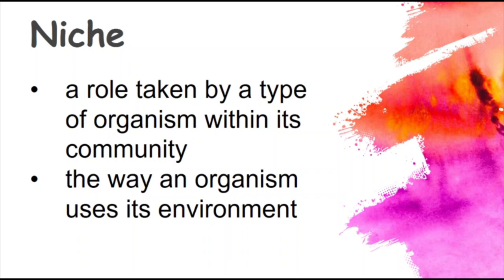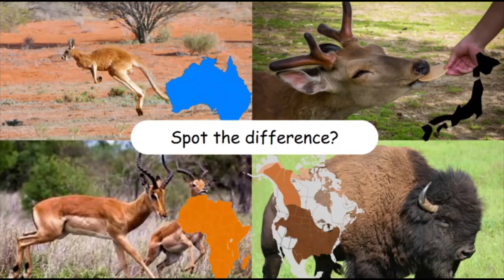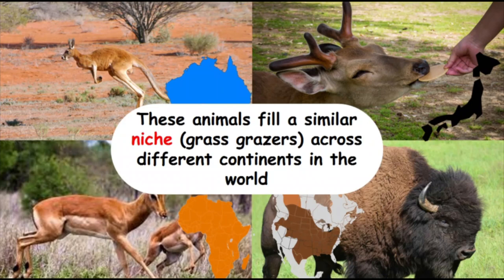For the exam board, if you were asked to define a niche, you would get a mark for saying 'an organism's role in its environment.' Looking at these different organisms, they all fulfill a very similar niche — they're all grass grazers but found on different continents: kangaroos in Australia, bison in North America. They fill a similar role because they all graze on grass and they're all mammals.